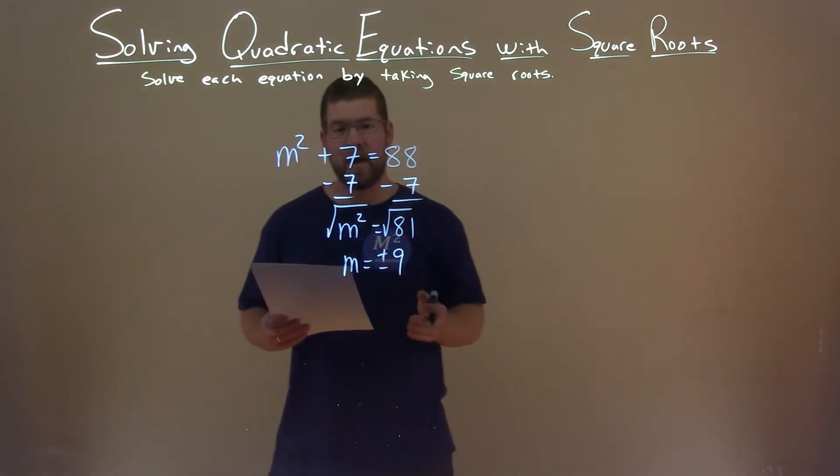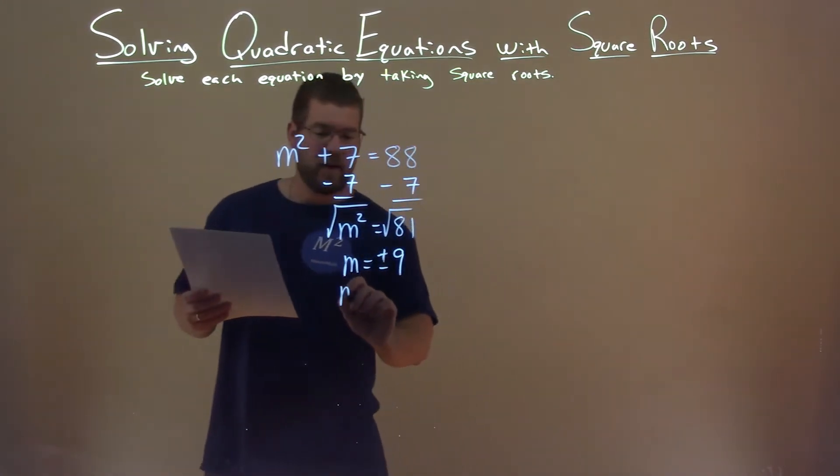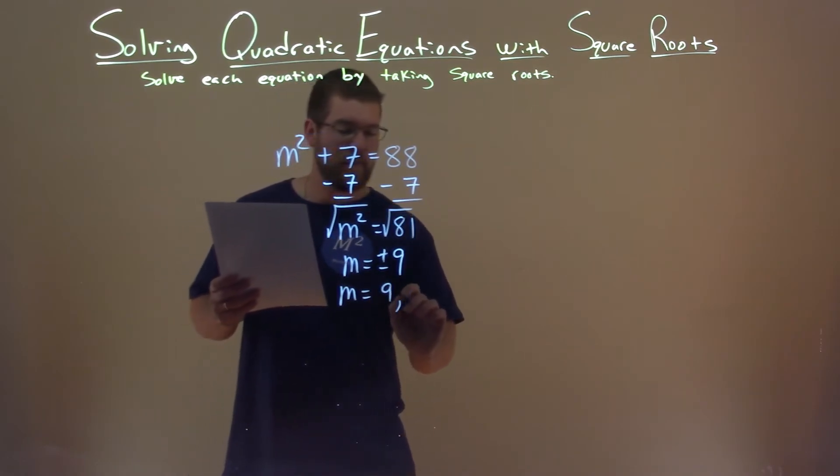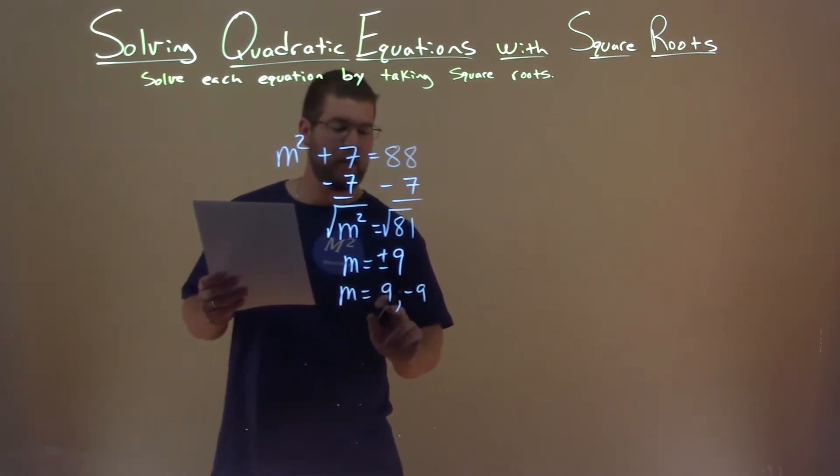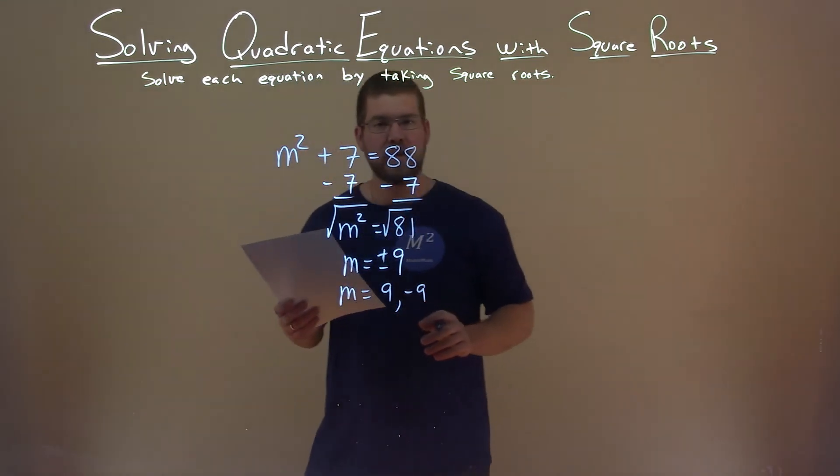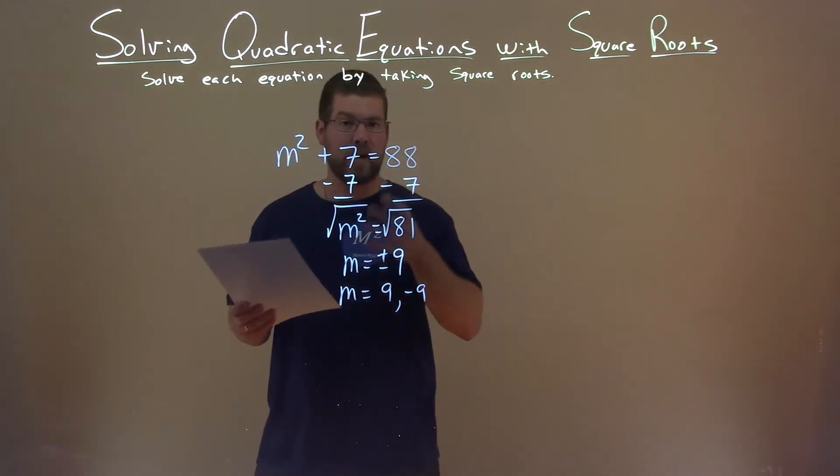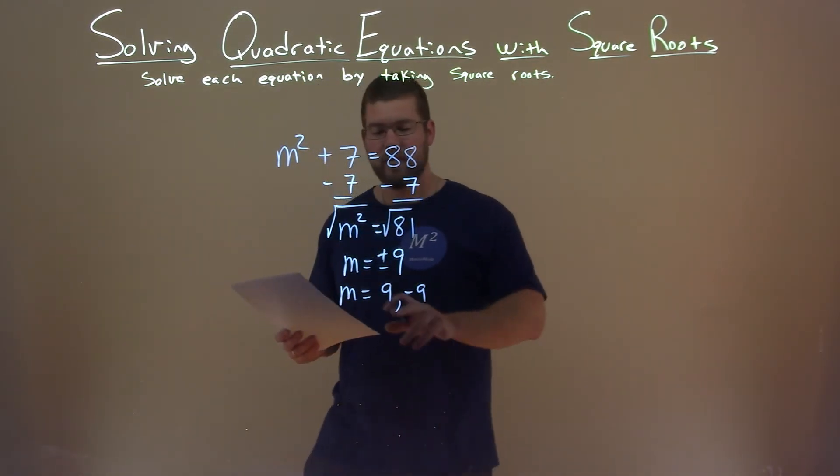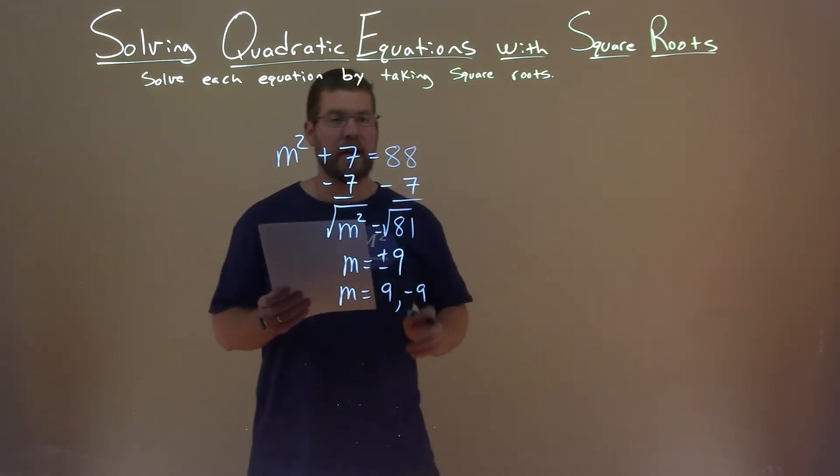So m equals plus or minus 9, and that's really our final answer. We can write it like this, a positive 9 and a negative 9, and if we've plugged both of those into our original equation, we would see that this equation is true and it worked. So again, final answer, m is 9 and negative 9.